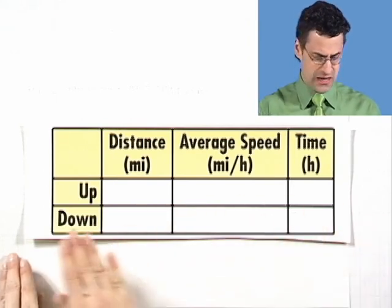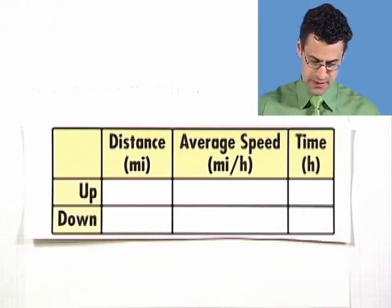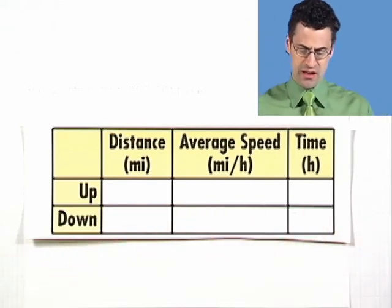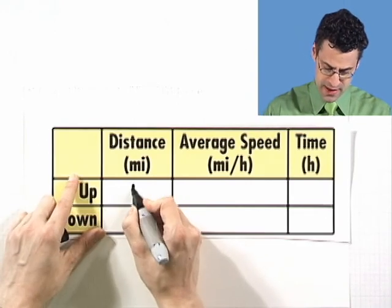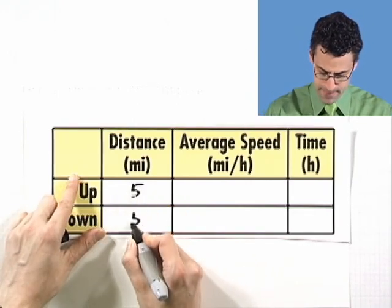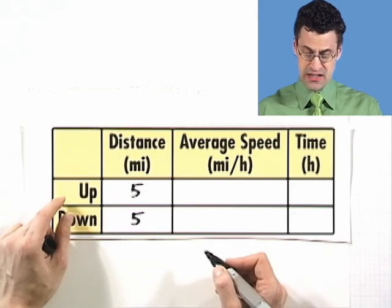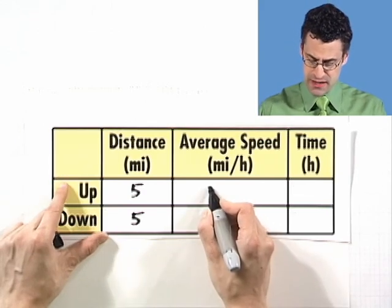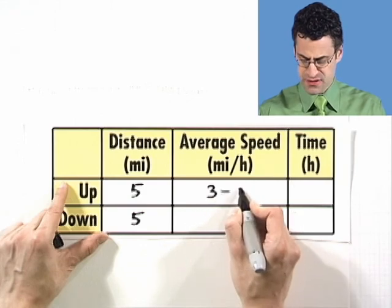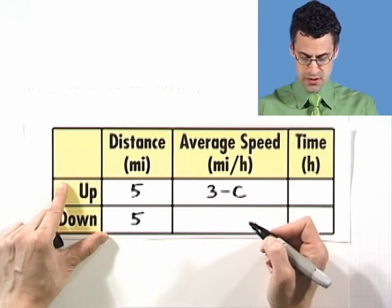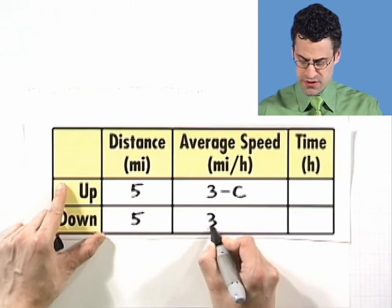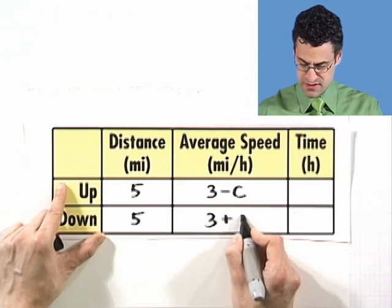So let's consider going upstream and going downstream. The distance in each case, we're told, is five miles. She goes five miles up, and then she comes five miles back, so that's pretty straightforward. And what's the average speed? Well, the average speed going up, we know, is her speed minus the water speed, which is the current. Whereas going down, she's helped by the current, so it's three plus C.